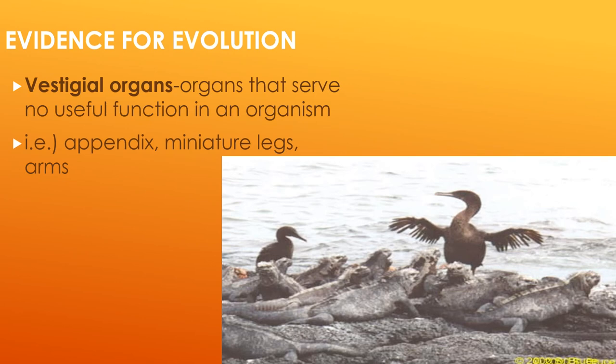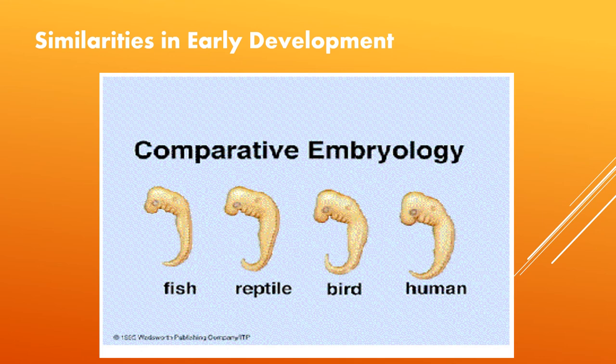Another evidence involves vestigial organs — organs that serve no useful function in an organism. Examples include the appendix and miniature legs and arms. Now, look at the similarities in early development of embryos, which is an illustration of comparative embryology. You can simply compare the similarities when organisms are still in early development. The first is for fish, the second for reptiles, then birds, and humans. They are really similar at the early embryological stage — the fish, the reptile, the bird, and the human.